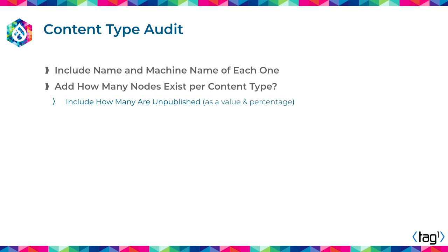They also had a curious example of a content type that was heavily used, but more than 90% of the content was unpublished. Upon revision, we realized that this content type was under moderation control — only the last step of the process means that the node was published. Everything else is unpublished or in draft state until the complete workflow process is finished. Not only do you need to migrate the content into the new site, but also to keep the different states so that when you are in the new platform, the publication workflow can continue as it was before.